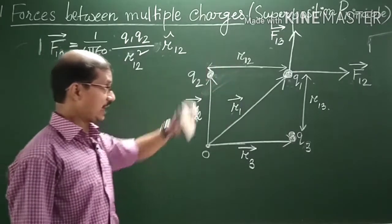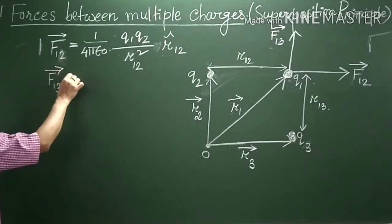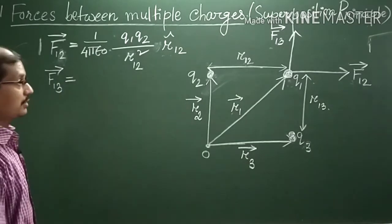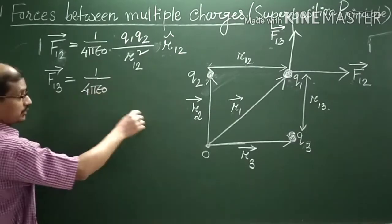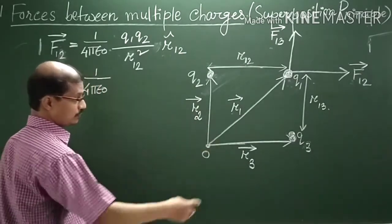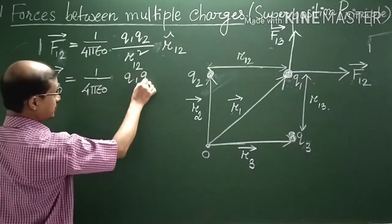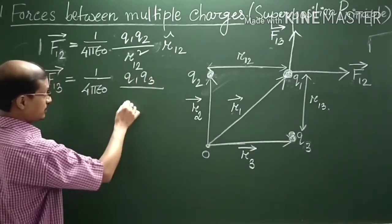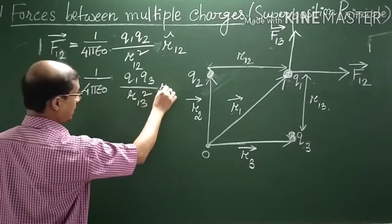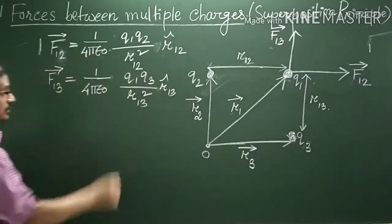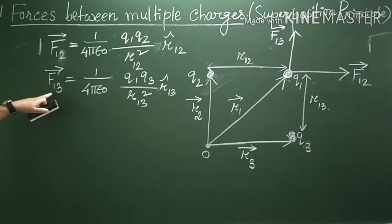Now if you express F13, the value is 1 by 4πε₀, Q1Q3. The distance is R13 whole square, R13 square into R cap 13. R cap 13 is the unit vector representing the direction of F13.